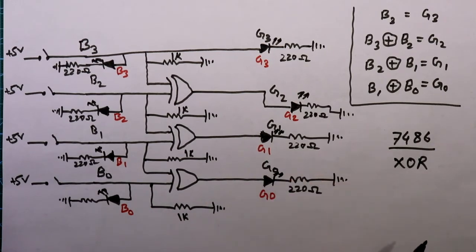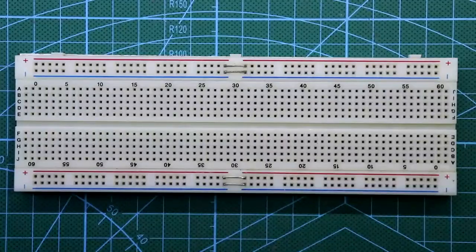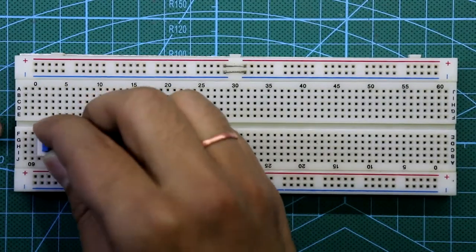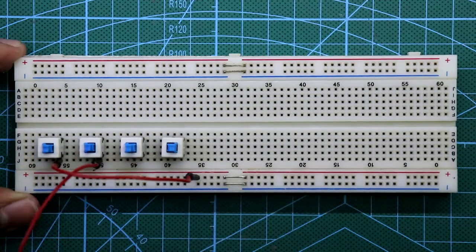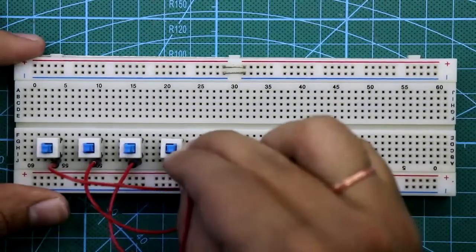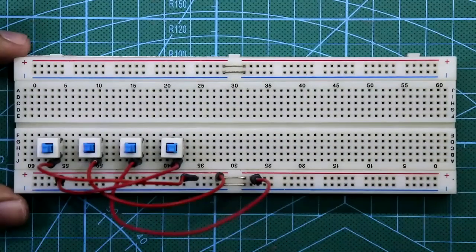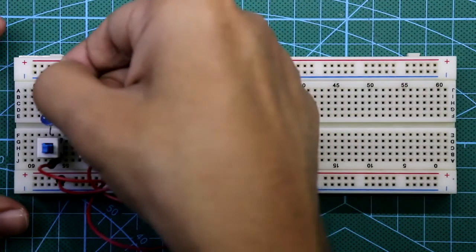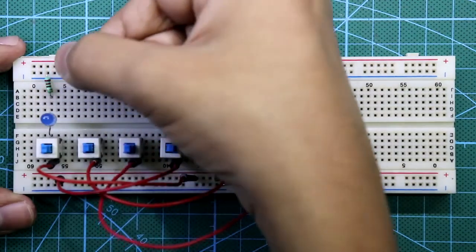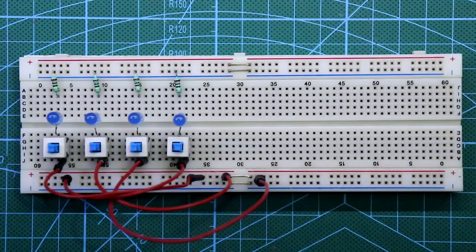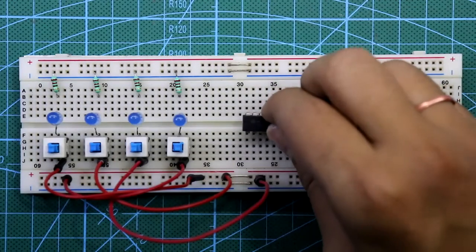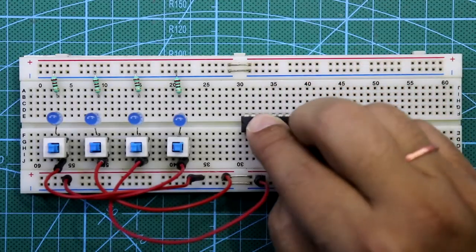Now let's see this on the breadboard. First put the B3 switch, then B2, B1, B0 — one pin of each is connected to plus VCC. Connect the input LEDs with 220 ohm resistors to ground for B3, B2, B1, B0. Now place the IC 7486 on the breadboard.